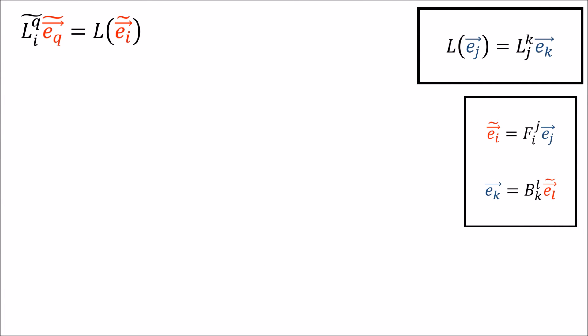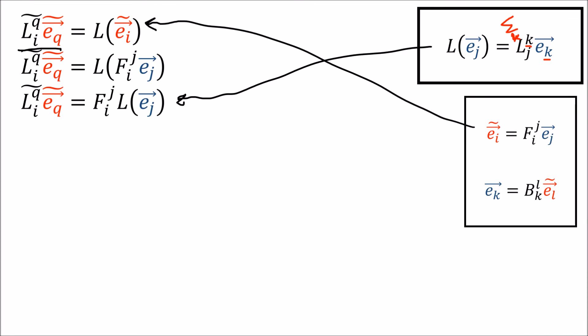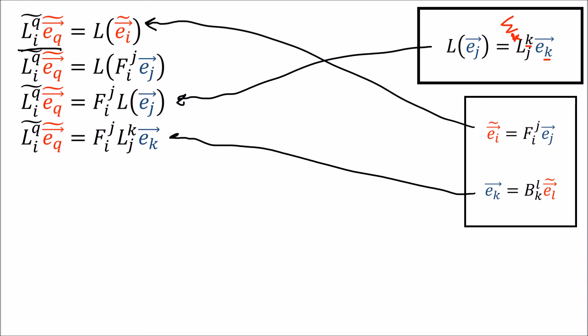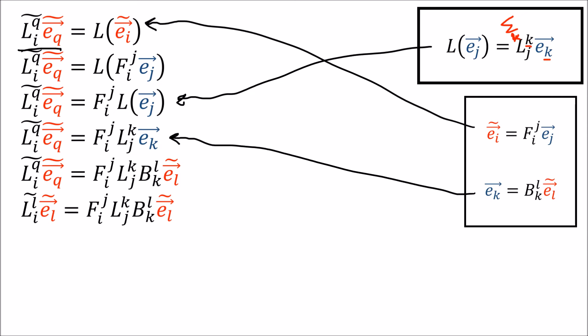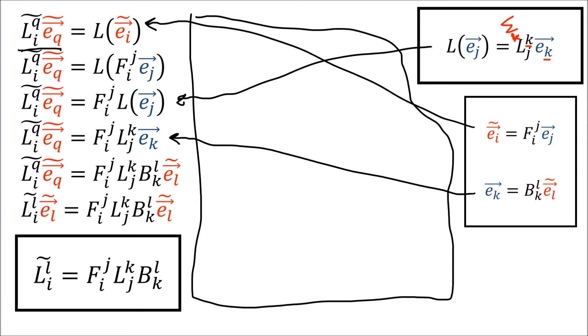Let me show how dropping the summation signs makes the derivation much easier. We start by writing L of E-tilde as a linear combination of the E-tilde basis — if an index appears on top and bottom, there's a summation. We invoke the forward transform, use the linearity of L, apply the definition for the L coefficients, invoke the backward transform, and change the summation index from Q to L. That's it — done. The whole derivation fits in just a few lines, compared to filling an entire slide before.